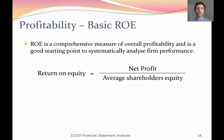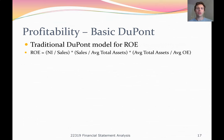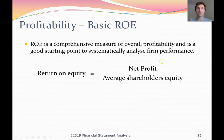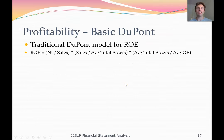However, when we actually want to understand the drivers of firm performance, the basic return on equity formula doesn't do enough. So we can break down return on equity using a DuPont analysis: net income over sales, times sales over average total assets, times average total assets over average equity. If you do the algebra, the sales terms cancel and the average total assets terms cancel, leaving you with net income over average owner's equity — the same formula. The maths works. This is a good starting point to break down the firm's performance into its profit margin, turnovers, and financial leverage.